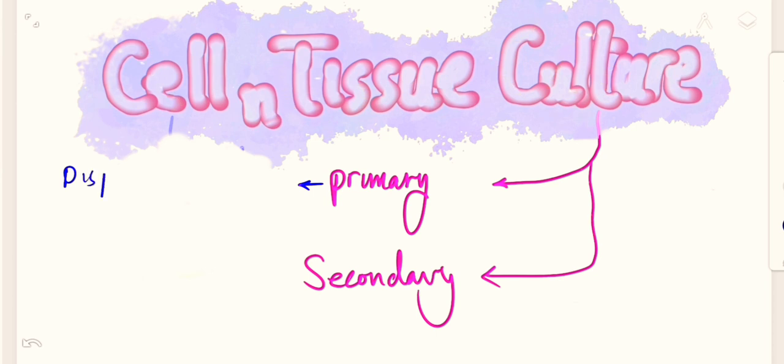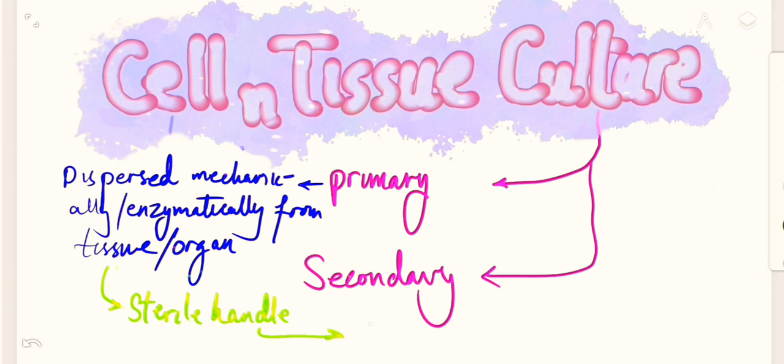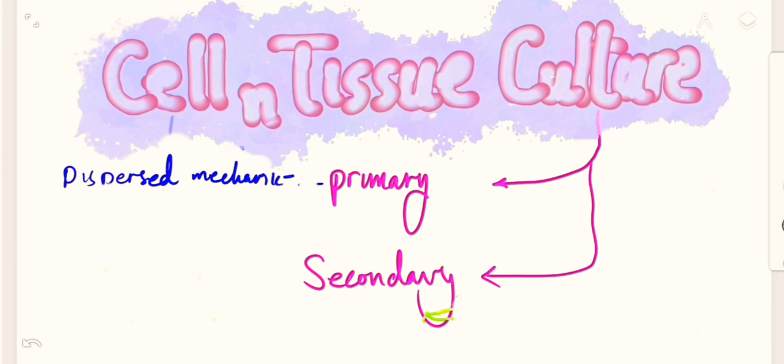The primary culture is the most simple one and in this form the tissue or the cell is being dispersed mechanically or enzymatically from the tissue or the organ. Then this dispersed tissue or cell is put into a special dish through sterile handling and there it would be let to grow, to survive and to live in vitro as it has been doing in vivo throughout its lifetime.